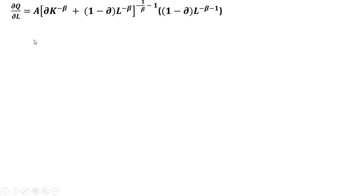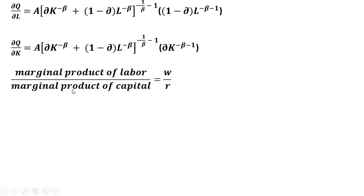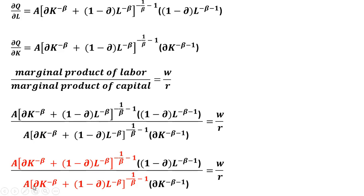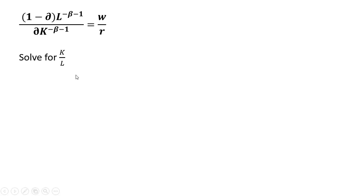Rewriting the marginal product of labor and the marginal product of capital, and then writing the optimal input mix: the marginal product of labor divided by the marginal product of capital equals the ratio of the price of labor to the price of capital. Making our substitution for MPL and MPK in the denominator, everything in red here will cancel — they are identical terms in the numerator and denominator.